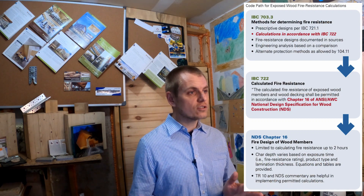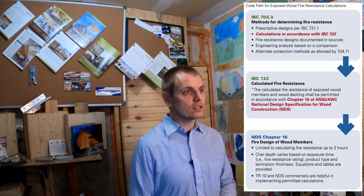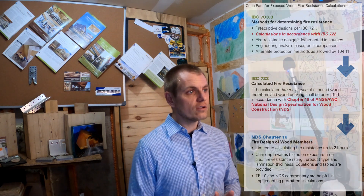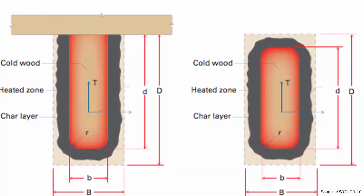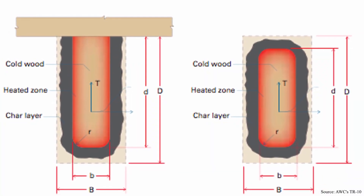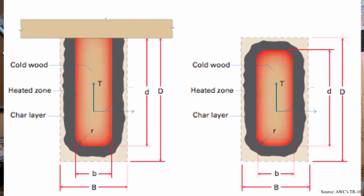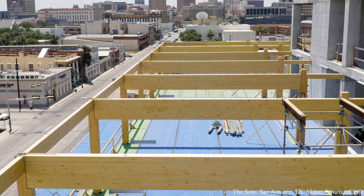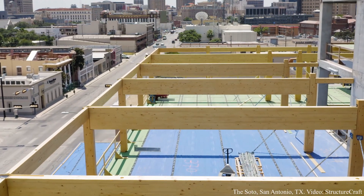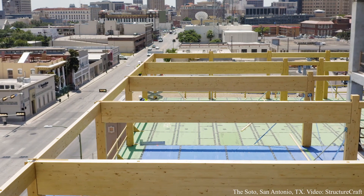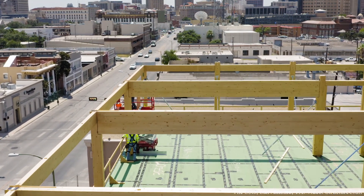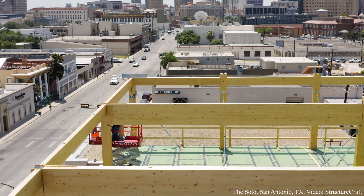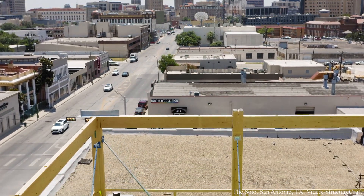This is all based on the charring effect that takes place as mass timber members are exposed to a fire, where a char layer forms on all exposed surfaces of the wood. This char layer forms as an insulative layer, and this is key because what this insulative layer is doing is protecting the remaining cross section. For an exposed glulam beam where we need to demonstrate a fire resistance rating, we use chapter 16 of NDS and run through those charring calculations — but today let's talk about what is actually occurring and how this char layer forms.